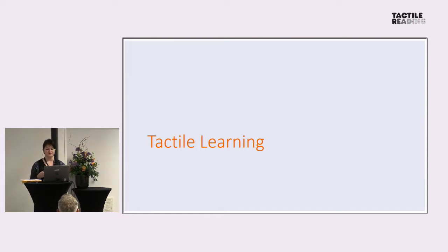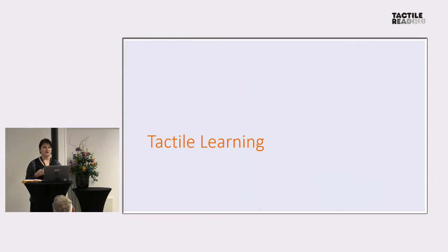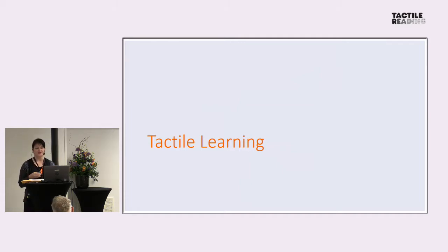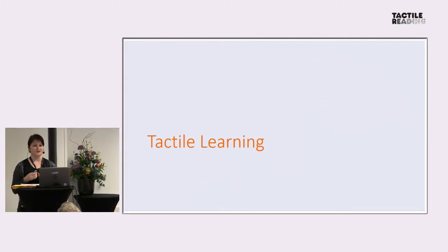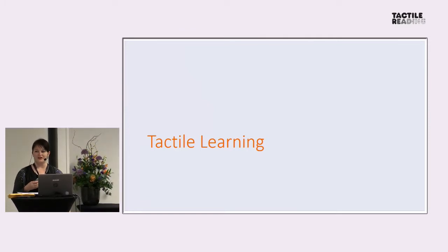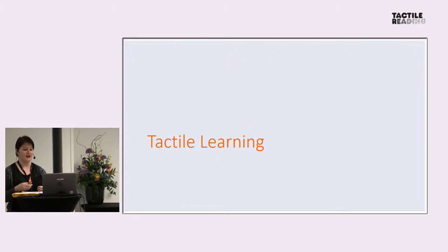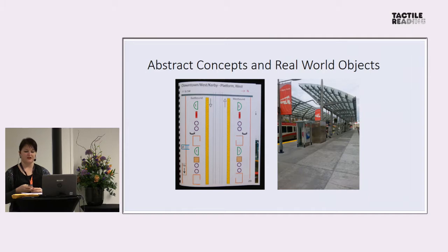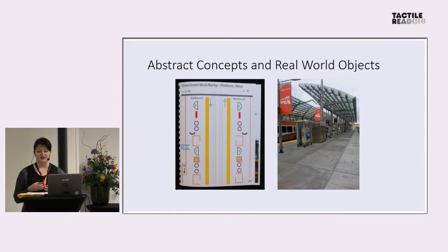Tactile learning happens in the same part of your brain as visual learning, so it can be a replacement process, but it also happens at the same time. Even if you are sighted or have a visual impairment, you should be touching things too. No matter how good our vocabulary is, we have a hard time describing things as complex as a map — that kind of confusion about directions is exactly why we need to get lines underneath our hands.